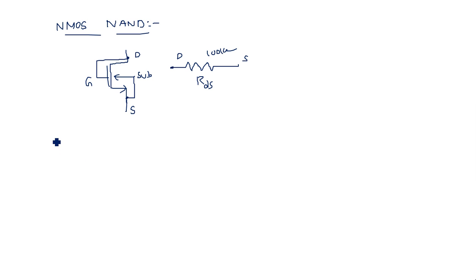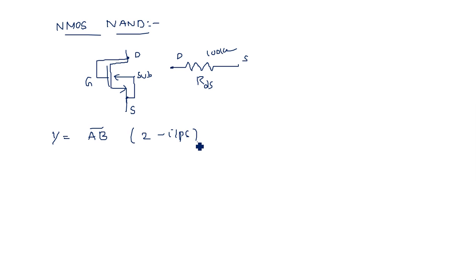Now coming to the NAND gate. Let us consider the NAND operation: Y is equal to AB bar. That means a two-input NAND operation. There are two configurations for creating an NMOS logic circuit: one is the pull-up device and the other is the pull-down device.